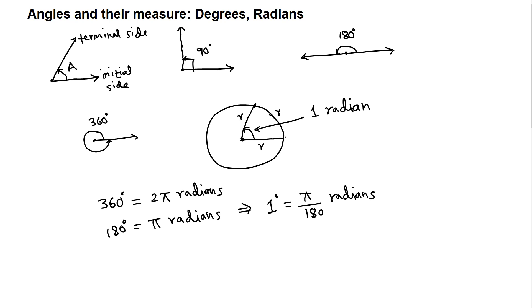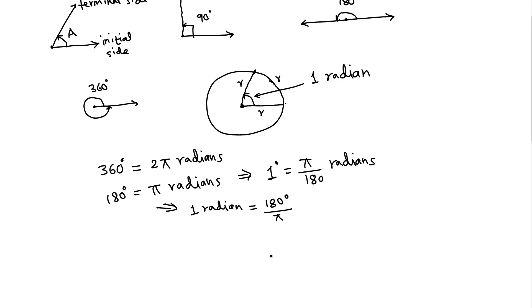This is the formula we use to convert degrees into radians. Instead of dividing by 180, if we divide by π both sides, we get 180 over π degrees. So if we want to convert radians into degrees, we multiply by 180 over π. Let's do some examples.